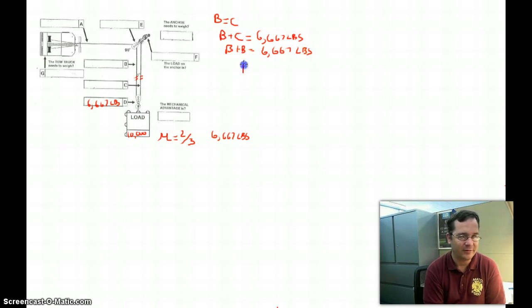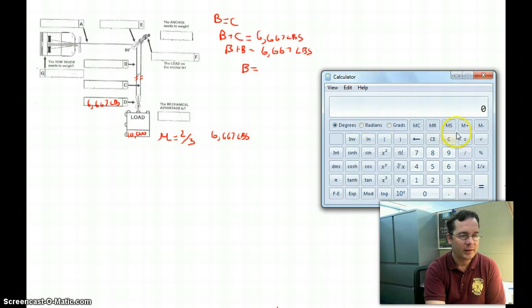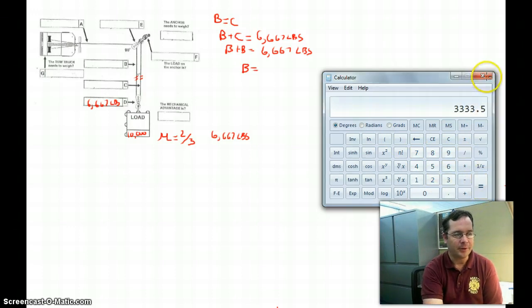Basically, B is going to equal 6,667 divided by 2. So 6,667 divided by 2, we'll call that 3,334 pounds.